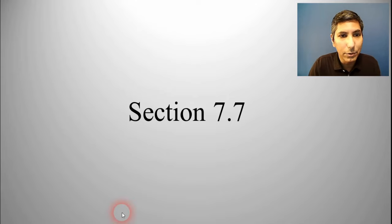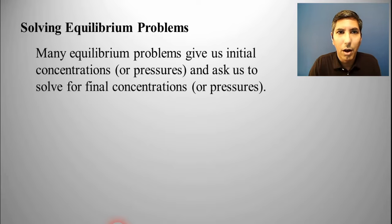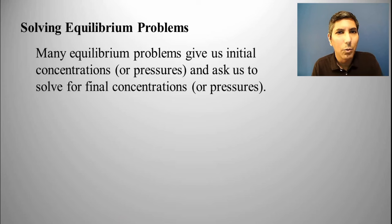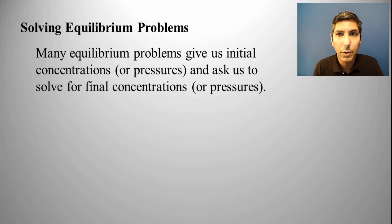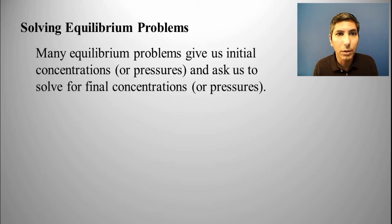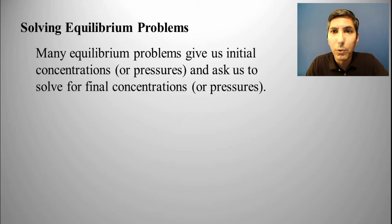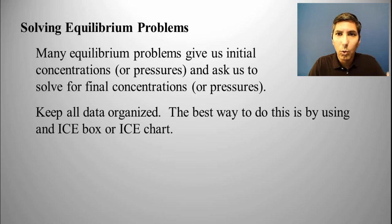Whenever we talk about how to solve equilibrium problems, often we are given some initial concentrations and we're often asked to solve for the final concentration. These might be pressures in the case of a Kp problem. Sometimes all of these numbers can be very overwhelming, especially if you have four, five, maybe six reactants and products to keep straight, and you have to keep the mole ratio straight. So this can get very confusing and overwhelming if you're not careful. I strongly recommend that you use a very organized method of working these problems.